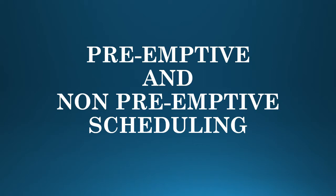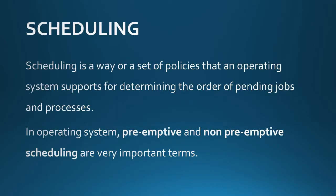In this session, we are going to discuss pre-emptive and non-pre-emptive scheduling techniques. First of all, let us understand what scheduling means. Scheduling is a way or a set of policies that an operating system supports for determining the order of pending jobs and processes — that is, operating system pending jobs and processes ko kis order mein process karega, usei scheduling kehte hain.